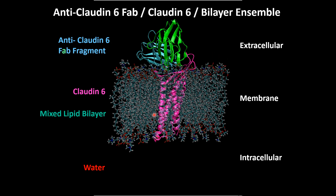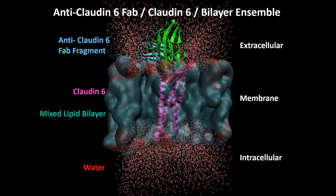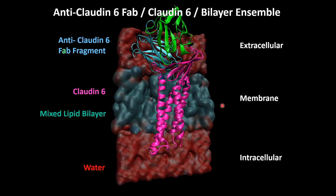The transmembrane domains of claudin-6 were then embedded in a mixed lipid bilayer, shown here in light blue and white licorice representations. Finally, the biomolecular construct was solvated by TIP3 water molecules, shown here as red and white lines. Here is another rendition with the lipid bilayer shown as a surface representation. Water and lipid molecules in front of the protein have been hidden to reveal claudin-6 embedded in the membrane as well as the relative positions of the biomolecules.